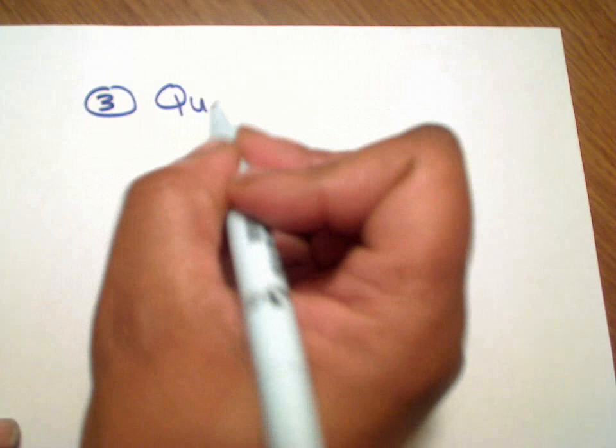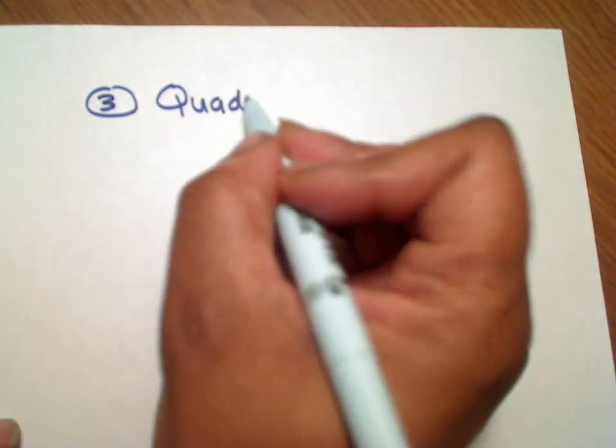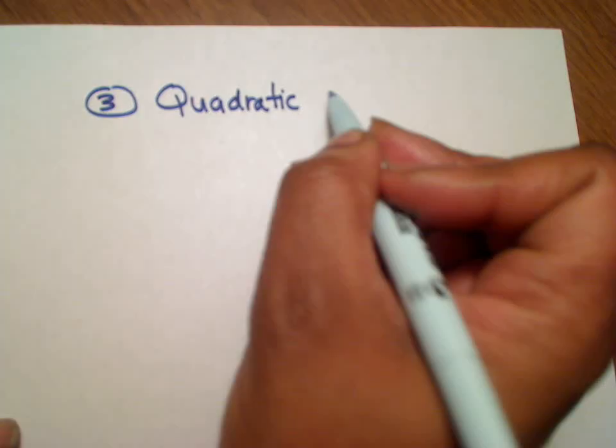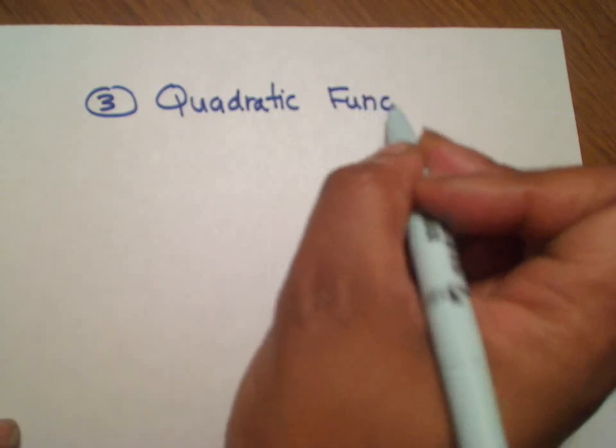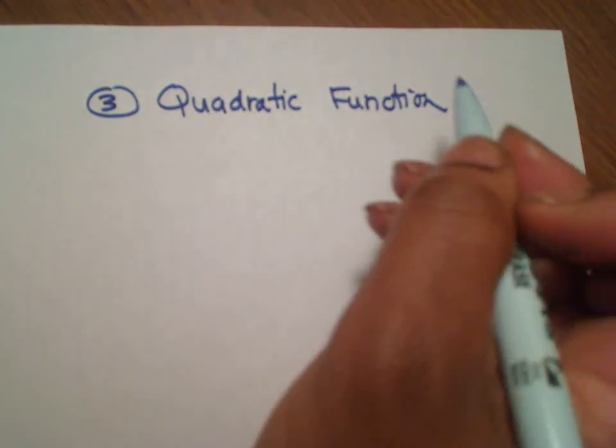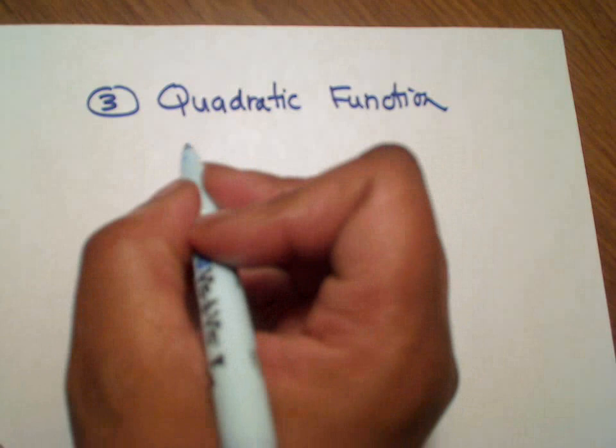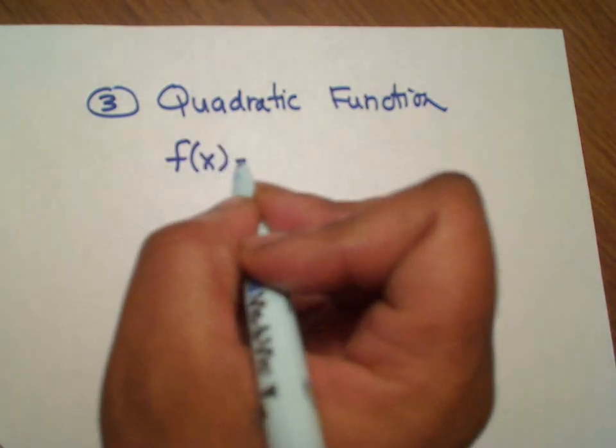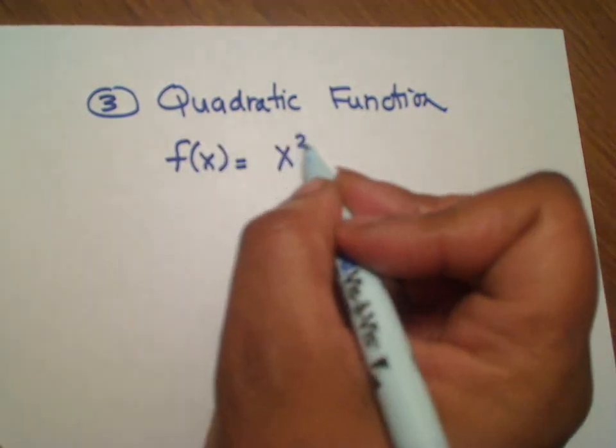And the last one they gave to you was number three was the quadratic equation which states basically this. So they gave you a quadratic function. And what the quadratic function was doing basically, if you notice f(x) is equal to x squared.